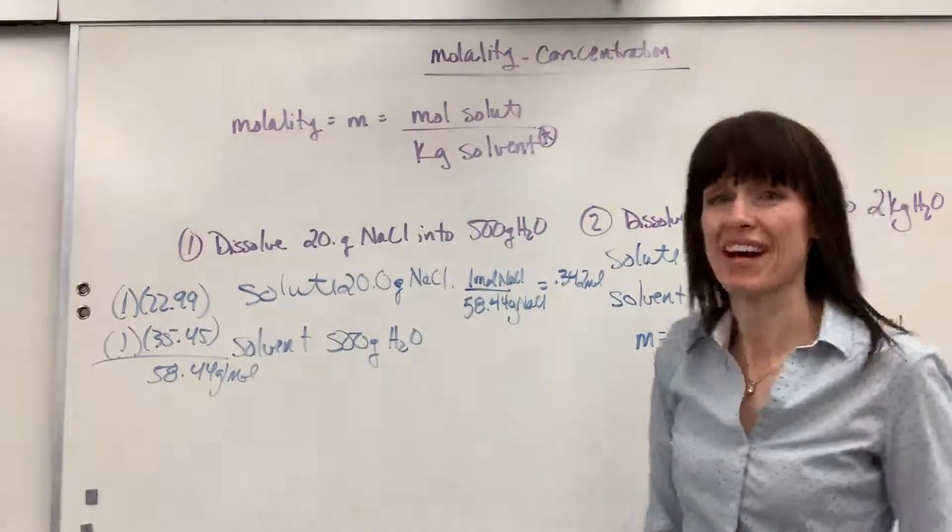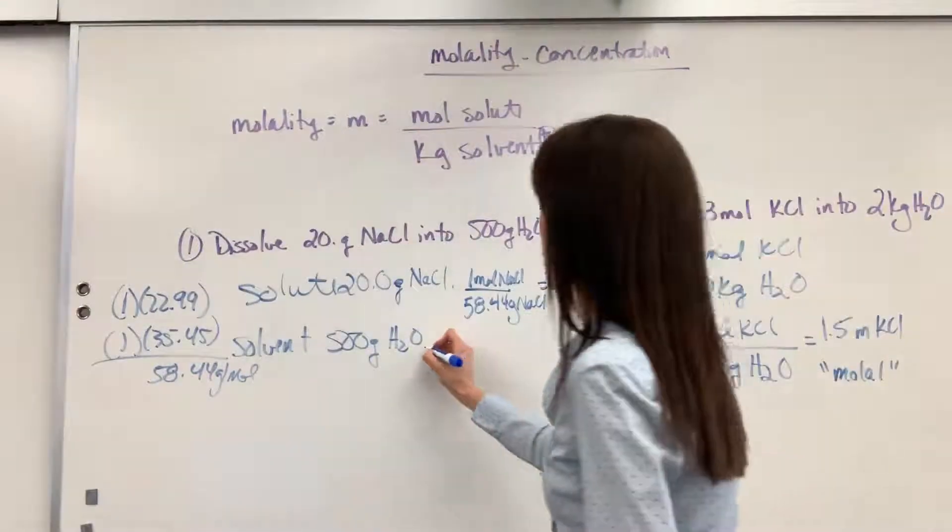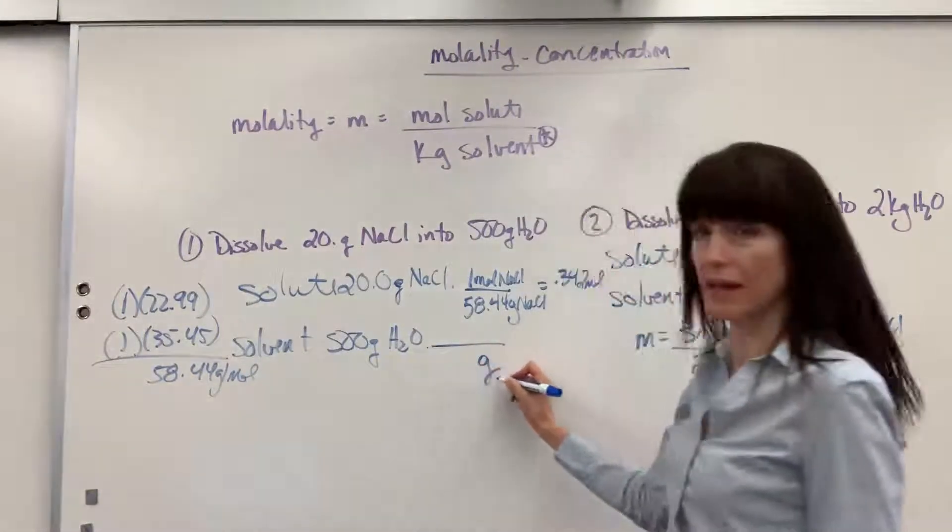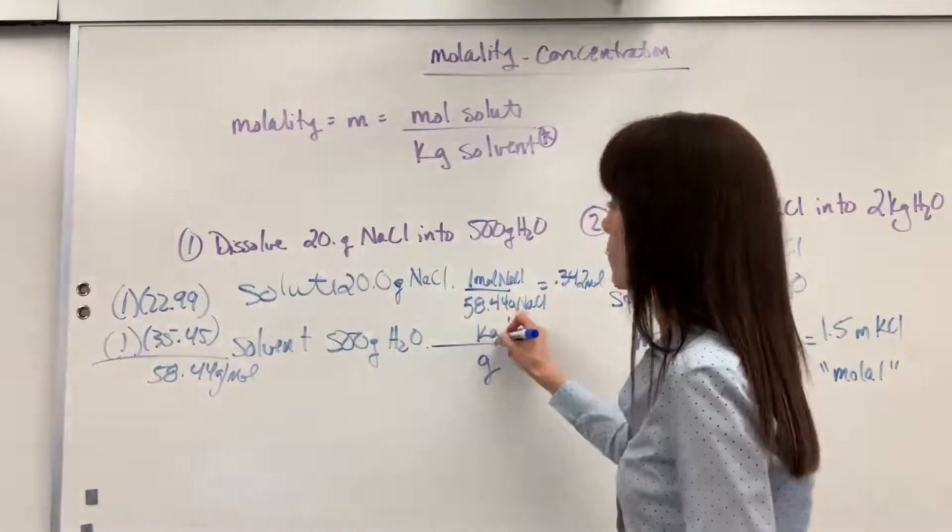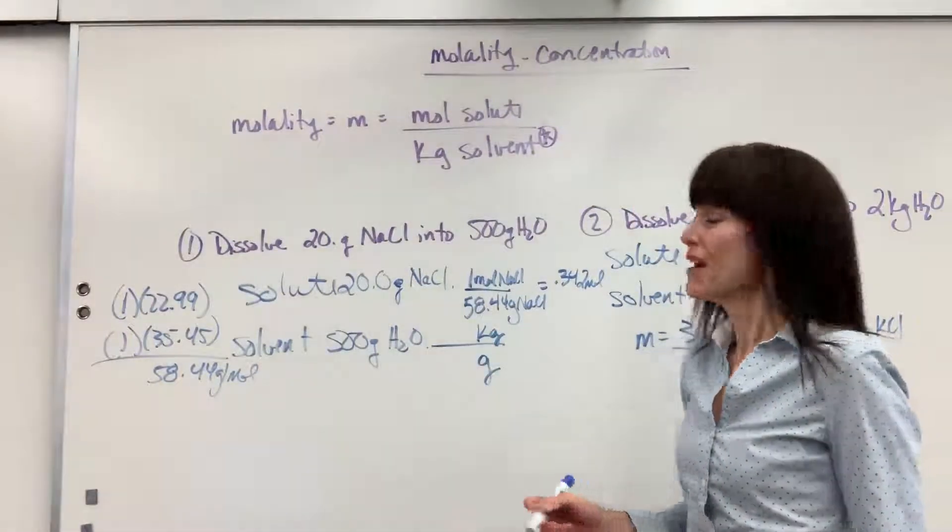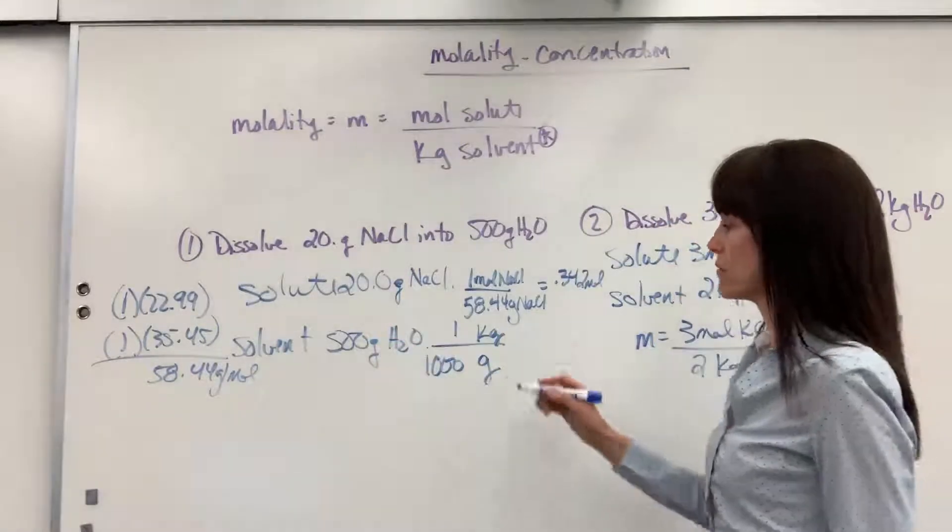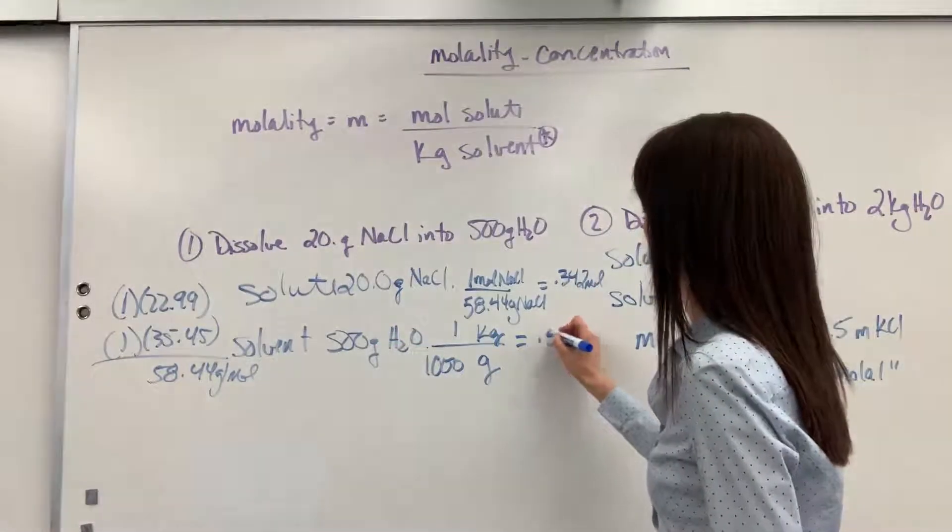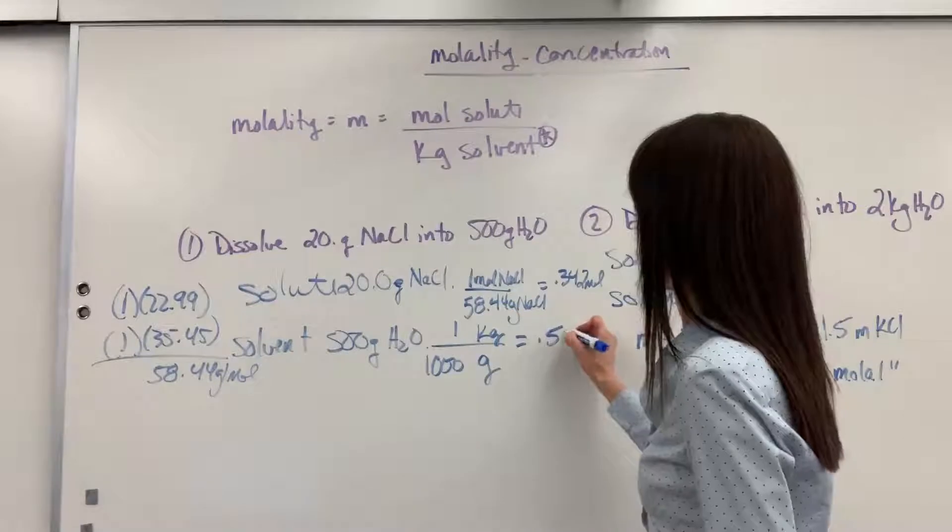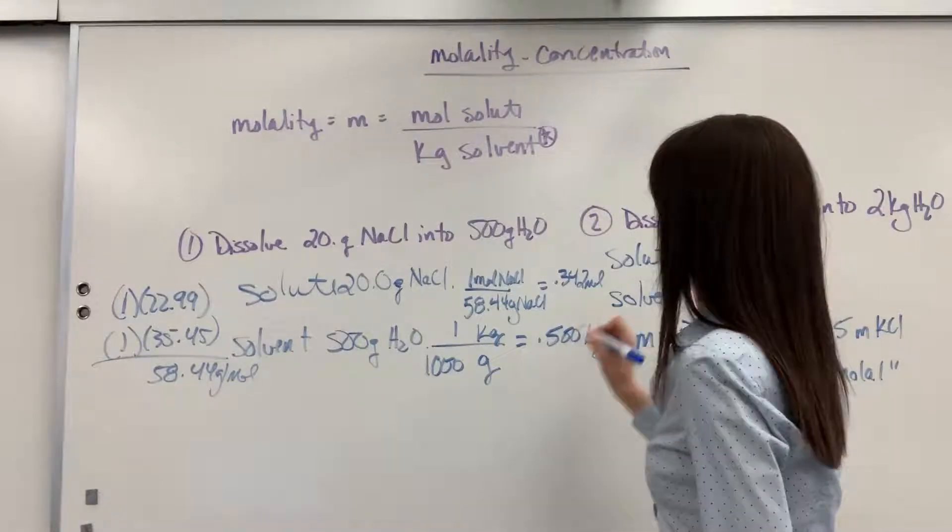Now my solvent, I have to have that in kilograms. So we'll go from grams. I put that in the denominator. In kilograms is what I want. We put that in the numerator. One kilogram has 1,000 grams. So 500 divided by 1,000 gives us 0.5 kilograms of water.